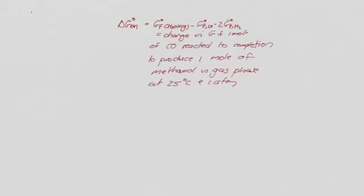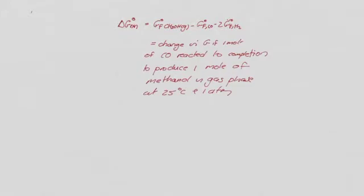The next thing we need to calculate is ΔG° of reaction, which is the G of formation of the methanol in the gas phase, minus G of formation of the CO, minus 2 times G of formation of the hydrogen. This again is the change in G if one mole of CO reacted to completion to produce one mole of methanol in the gas phase, at 25°C and one atmosphere. Please note the basis in thermodynamics is always one atmosphere — not one bar, one atmosphere.